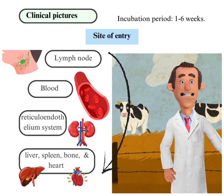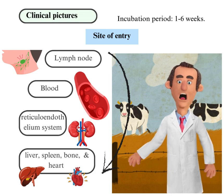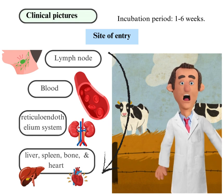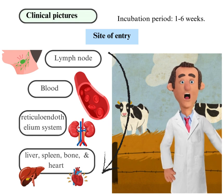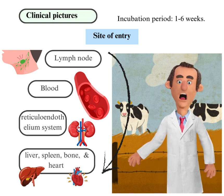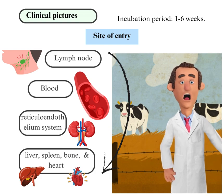Brucella begins from the site of entry. The organisms then enter the regional lymph nodes, pass into the blood, and then reach the reticuloendothelial system, bone, and heart. This can lead to splenomegaly, arthritis, endocarditis, or meningitis.